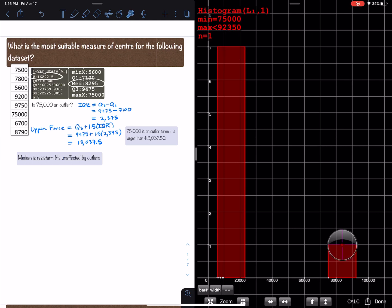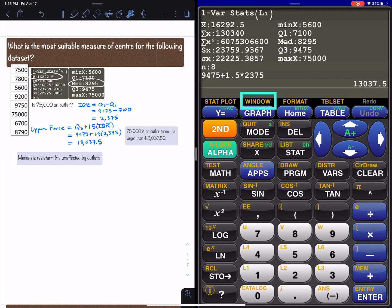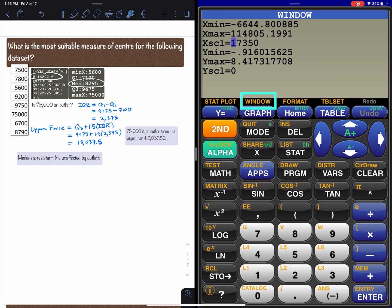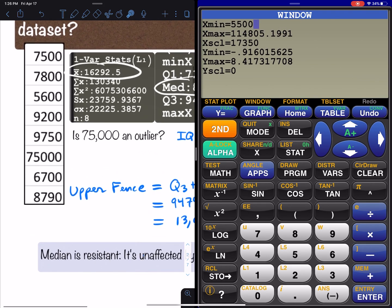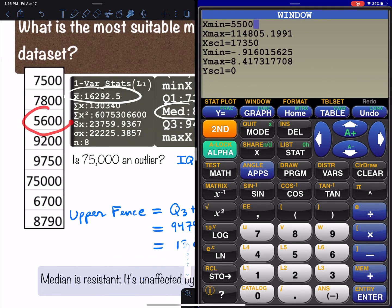So the way that it created this histogram is that the interval length is huge. So if I go to window I can make this a little better by going to second window, change the x-min to like 5500. Why 5500? Well the smallest value seems to be 5600, and for the regular data seems like it goes to around 10,000, a little less than 10,000. So I'm going to make this 10,000. My x-scale I'm going to decrease it to like 500 and then I'll take a look at that.